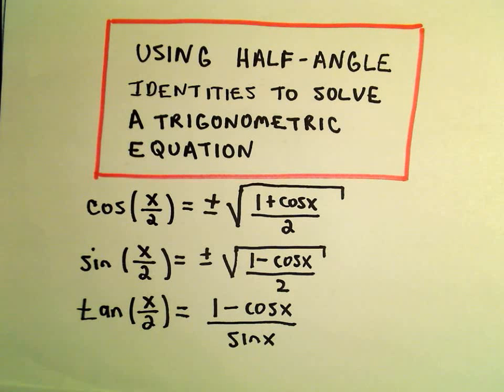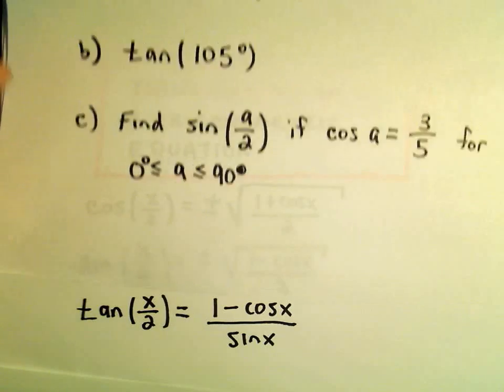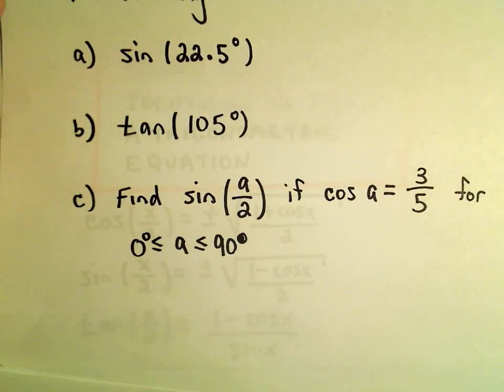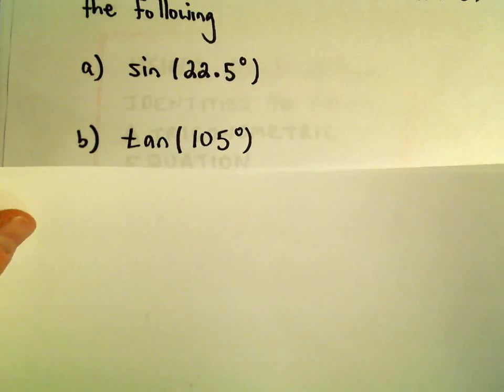Okay, so another example here of using our half-angle identities to evaluate a trig expression. We want to evaluate tangent of 105 degrees.